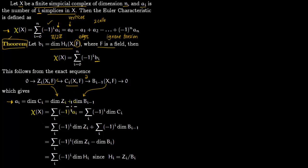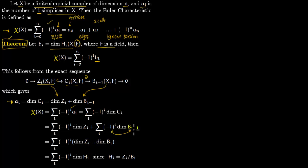We copy the Euler characteristic definition and replace a_i with dimension of C_i. Then instead of dimension of C_i, we write dimension of B_i plus dimension of B_{i-1}. Now we change the index: instead of i we put i minus 1, so to make the indices match you have to put a minus sign. Either you put i minus 1 here or you make this i — either way these two will no longer agree because one has index i and the other has index i minus 1, so you pick up a minus sign.